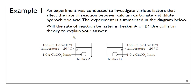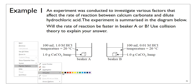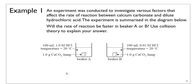An experiment was conducted to investigate various factors that affect the rate of reaction between calcium carbonate and dilute hydrochloric acid. The question asks whether the rate of reaction will be faster in Beaker A or B, using collision theory to explain your answer. This was a two-mark question: one mark for identifying which beaker has a faster reaction rate, and one mark for collision theory.